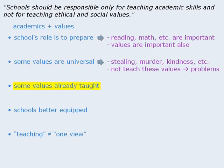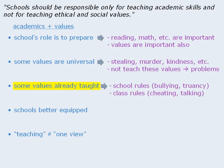For the point about some values already being taught in schools, we might note that schools already have rules for general student conduct, and most classrooms have rules as well. Then we might discuss how those rules are related to certain values, and even if those values are not explicitly discussed, they are implicitly enforced and, as such, are already being taught indirectly. We might even add that since these values are already taught indirectly, why not teach them directly?